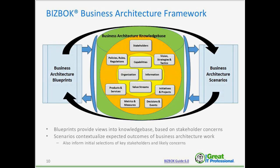There's at least one or two blueprints for every domain — a map, which in this case we'll look at capability maps, and a cross map, which shows how a concept relates to other domains. We'll look at not just capability maps, but also how capabilities intersect with organization, information, value, strategy, and initiatives. The types of blueprints we create should be derived from the scenarios we find ourselves in, addressing the concerns of stakeholders through diagrams, matrices, and tabular reports.